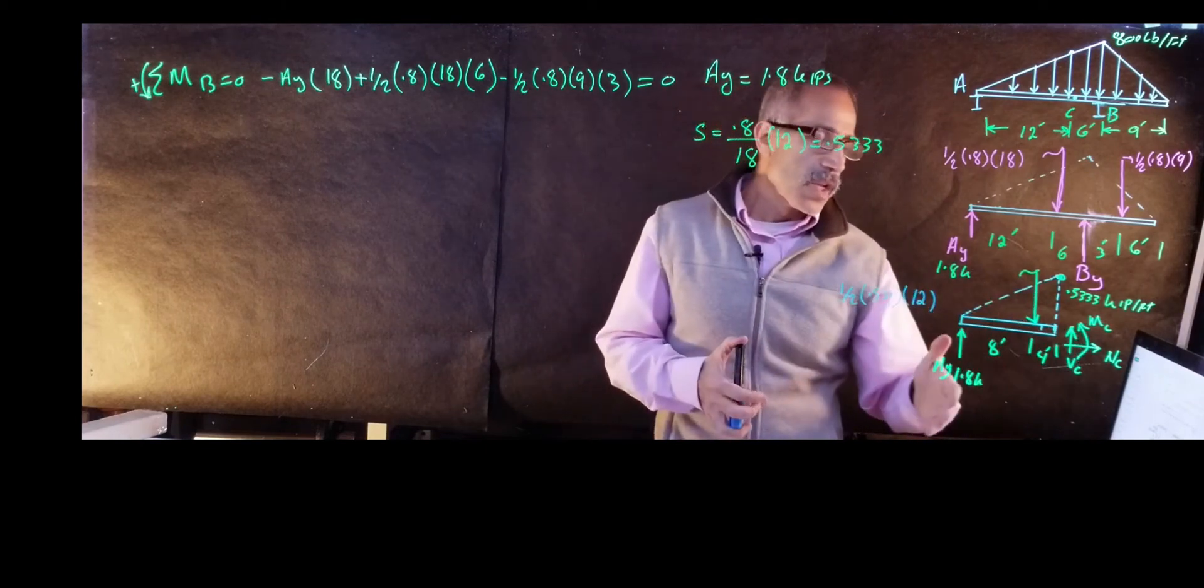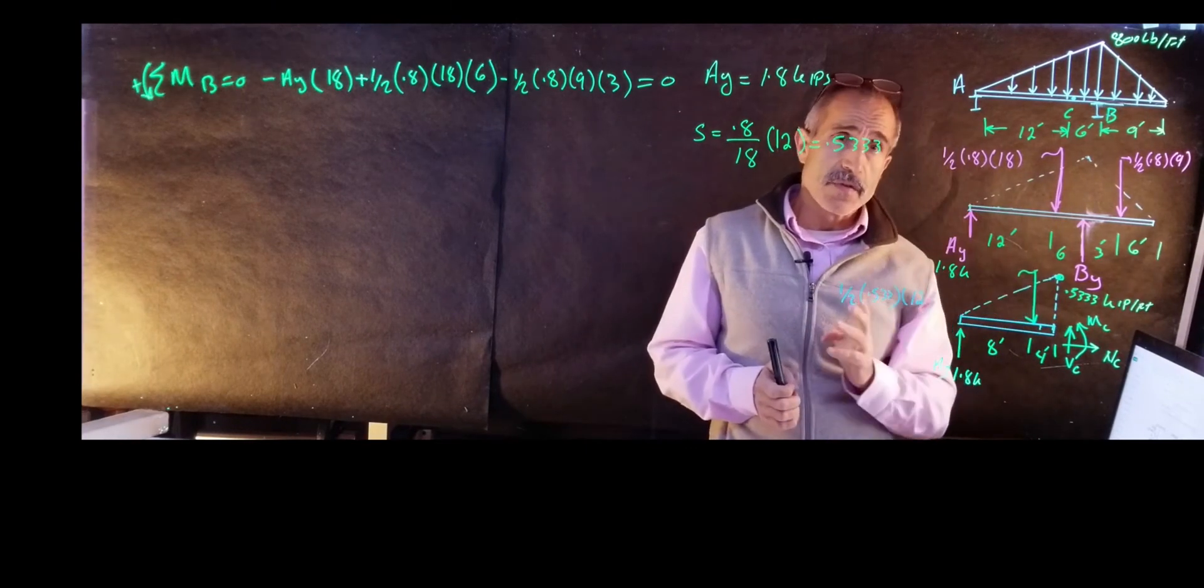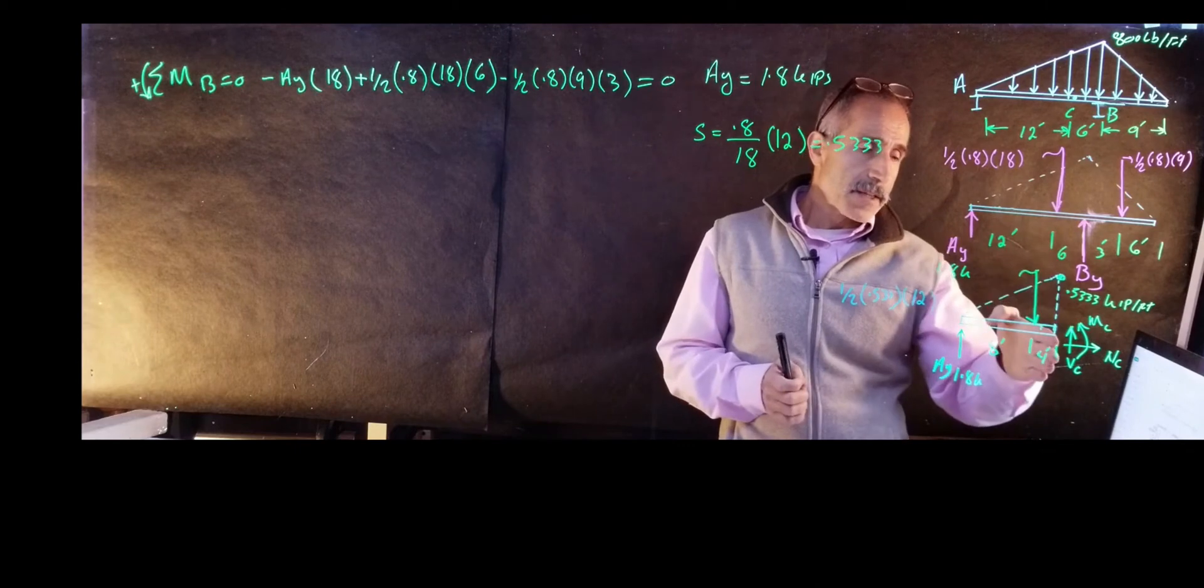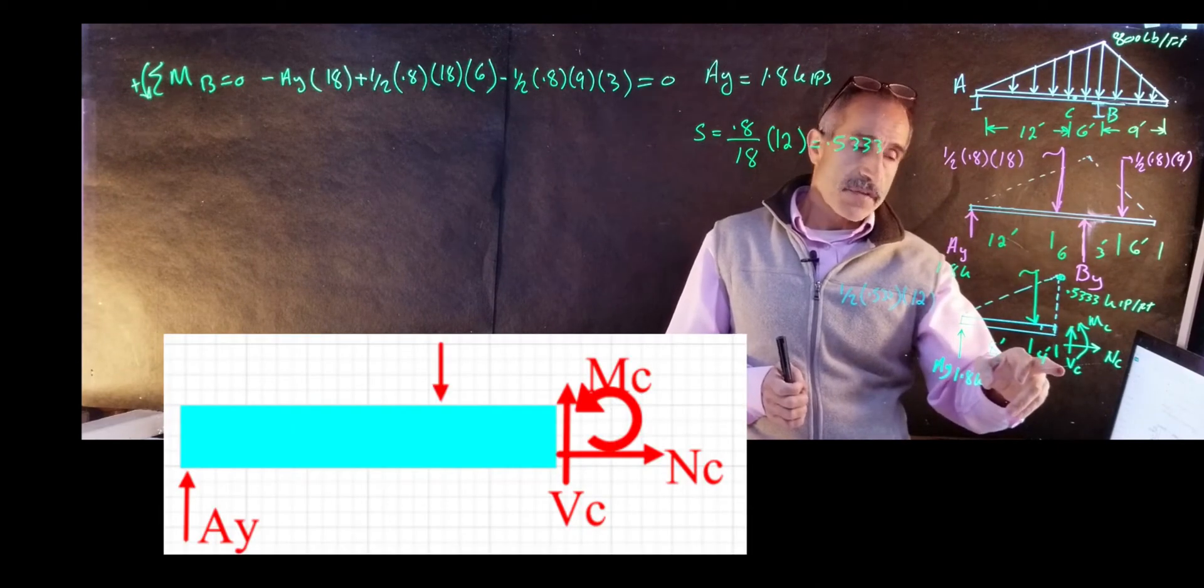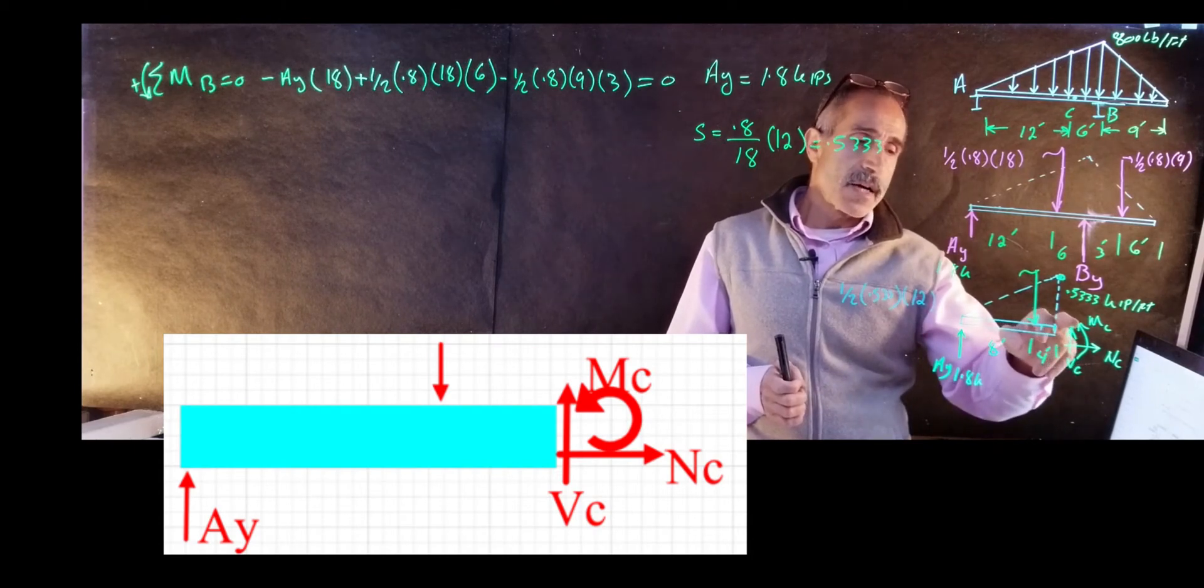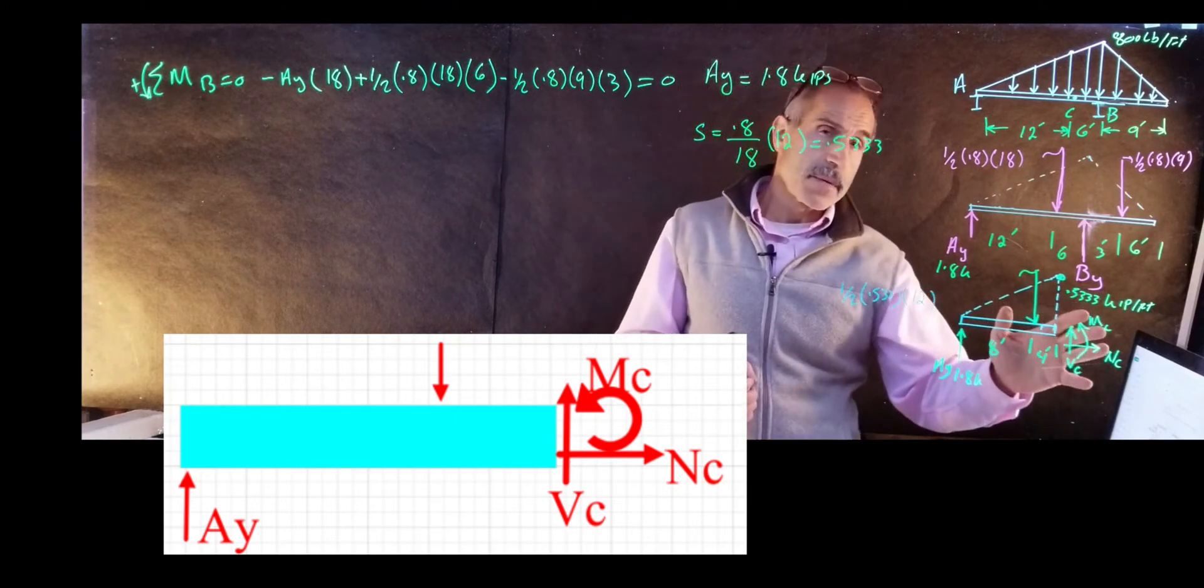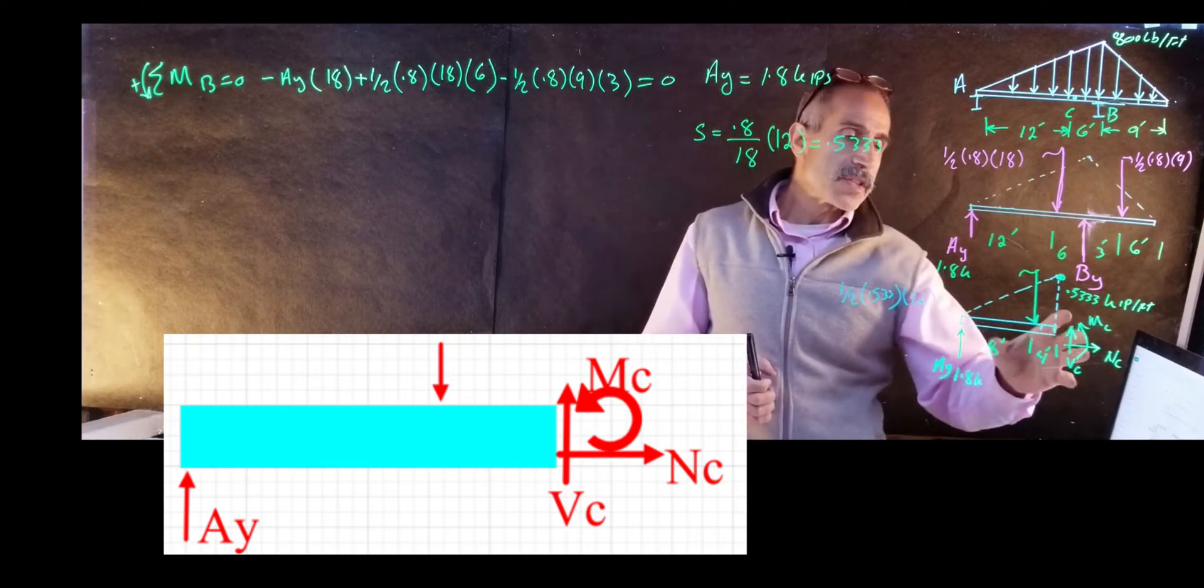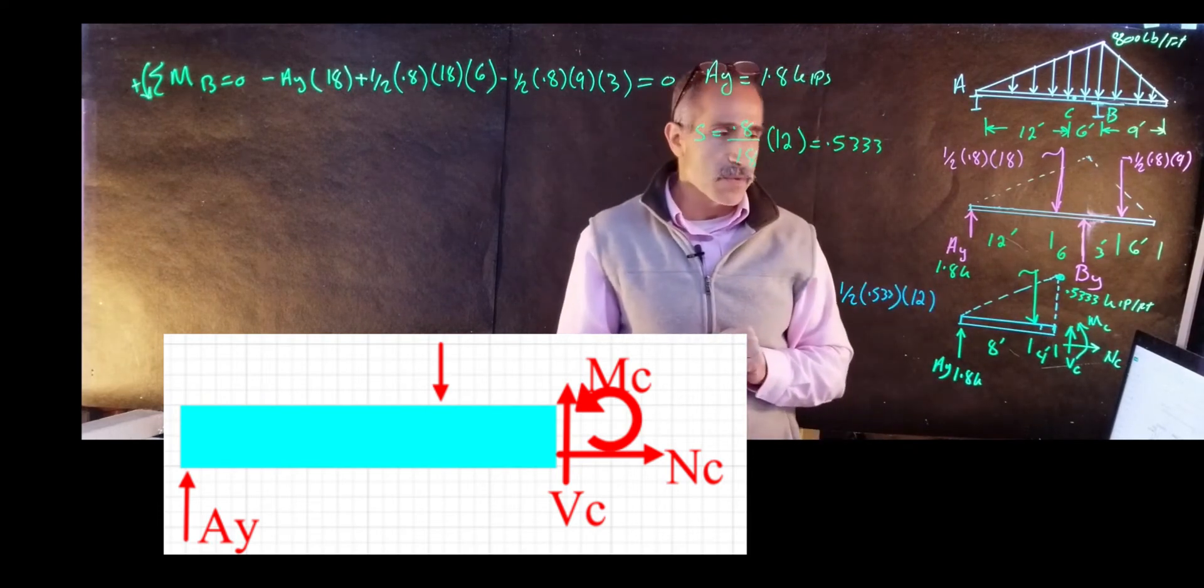Because I want to know, now when I cut this beam right here at point C, you have to replace it with three forces here. So we cut it right here. We're going to replace it with a shear force, which we call Vc, normal force, which we're going to call Nc, and a moment Mc. That's not MC hammer, by the way. So we've replaced it with all these three forces.